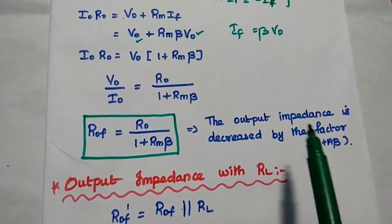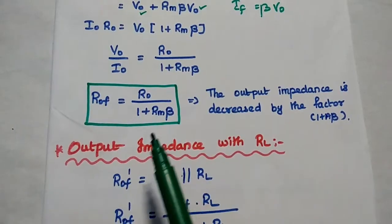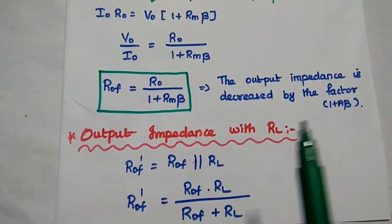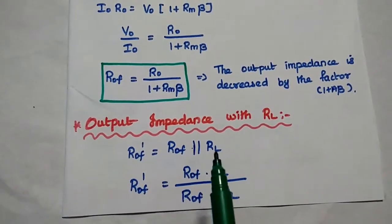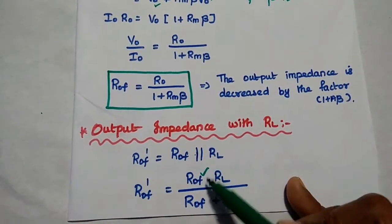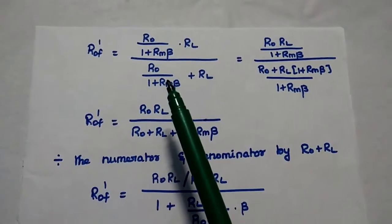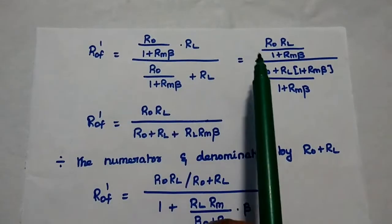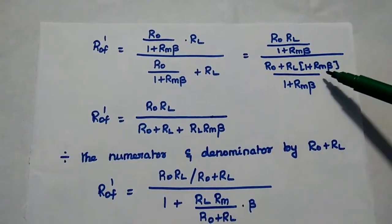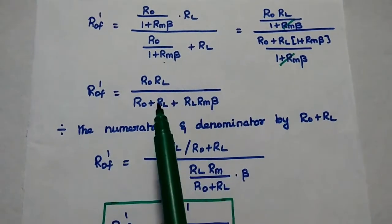The output impedance is decreased by the factor (1 plus A·beta). Next, we obtain the output impedance with load resistance RL. ROF' equals ROF in parallel with RL, using the parallel formula: ROF·RL divided by (ROF plus RL). Substituting ROF equals RO divided by (1 plus Rm·beta), we get ROF' equals RO·RL divided by (1 plus Rm·beta), the whole divided by (RO plus RL)·(1 plus Rm·beta) to form a common denominator.